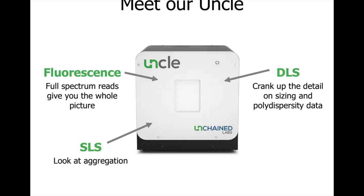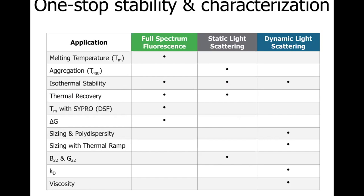The static light scattering is measured simultaneously with fluorescence and helps you understand the sample aggregation behavior. Dynamic light scattering gives you information about the sizing and polydispersity of the sample and can be used for a quality check. The UNCLE has a Peltier temperature control element and you can run experiments at a user-defined constant temperature or perform temperature ramps between 15°C and 95°C. The combination of three detection methods allows for 12 different applications that answer specific questions around protein stability.